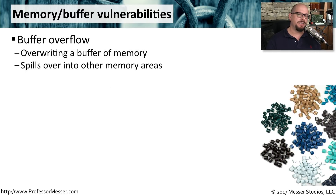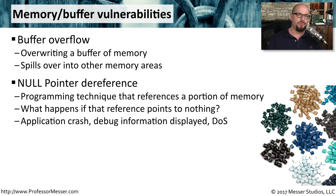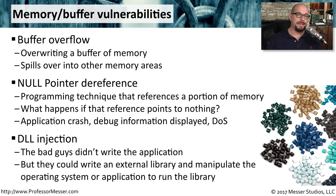Another type of vulnerability very similar to the integer overflow is a buffer overflow. This is when a certain amount of space has been allocated to store variables in an application, and the application allows you to store a variable that's larger than that allocated space. It spills over into other memory areas and potentially allows more access to the system than normally would be available. Another type of memory vulnerability that usually causes applications to crash or denial of service is a null pointer dereference — where the programmer is dereferencing a portion of memory that's being used by the application, except there's nothing at that memory address to dereference and the application crashes. Another common vulnerability is DLL injection, where the bad guys put their own libraries in place so that when an application references the library, it's effectively referencing the bad guy's code.